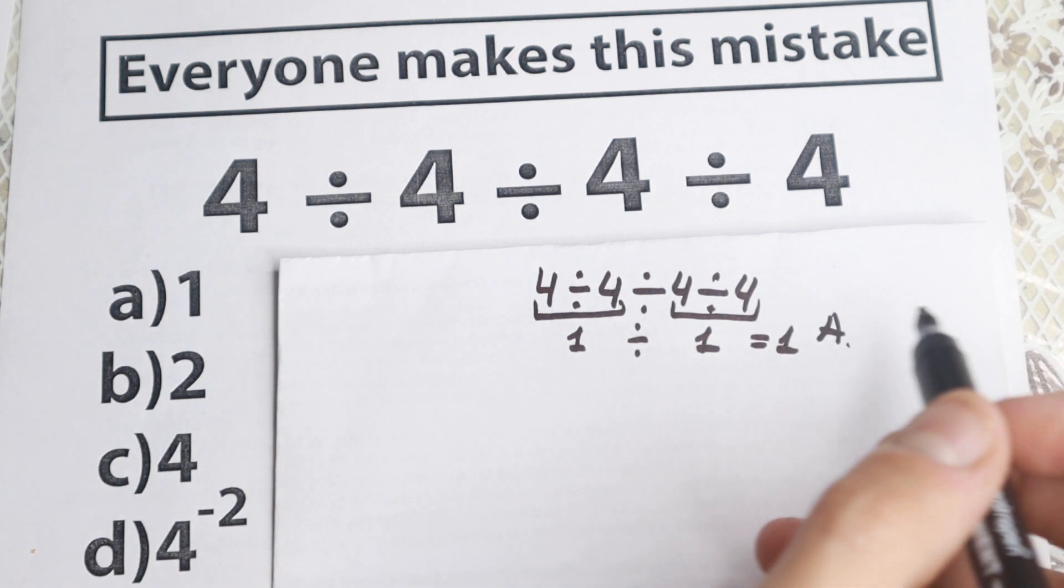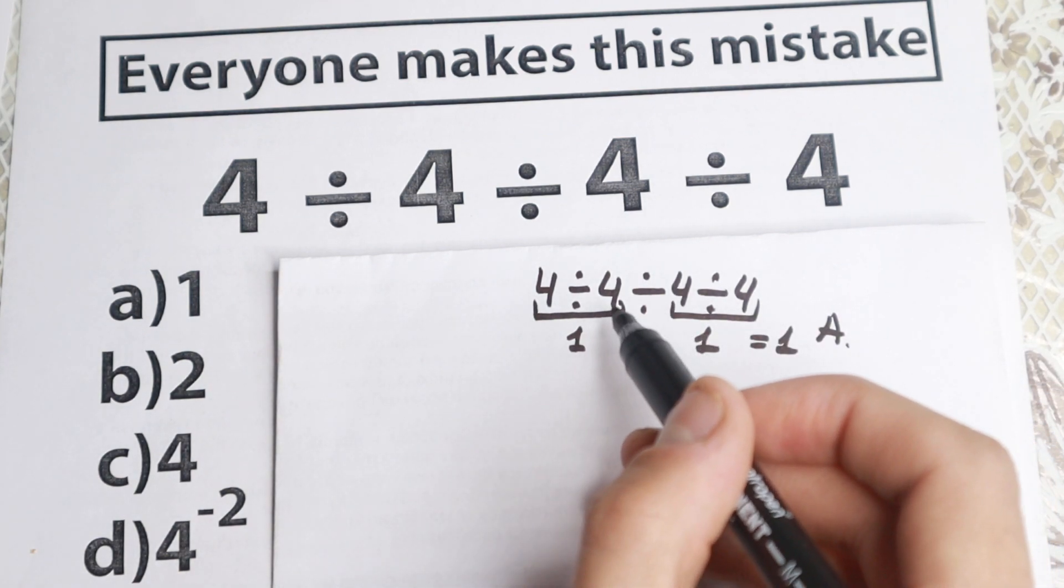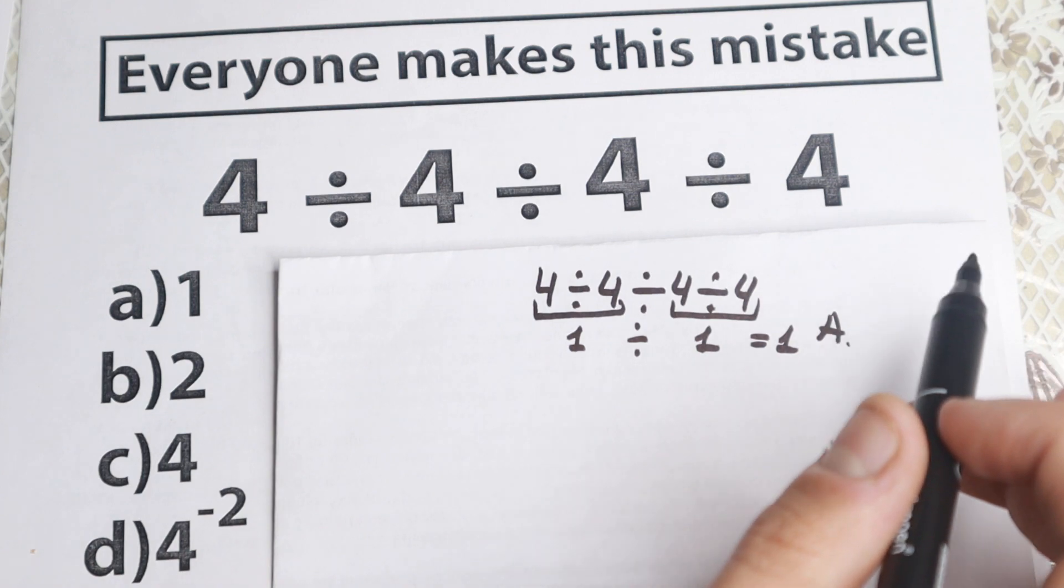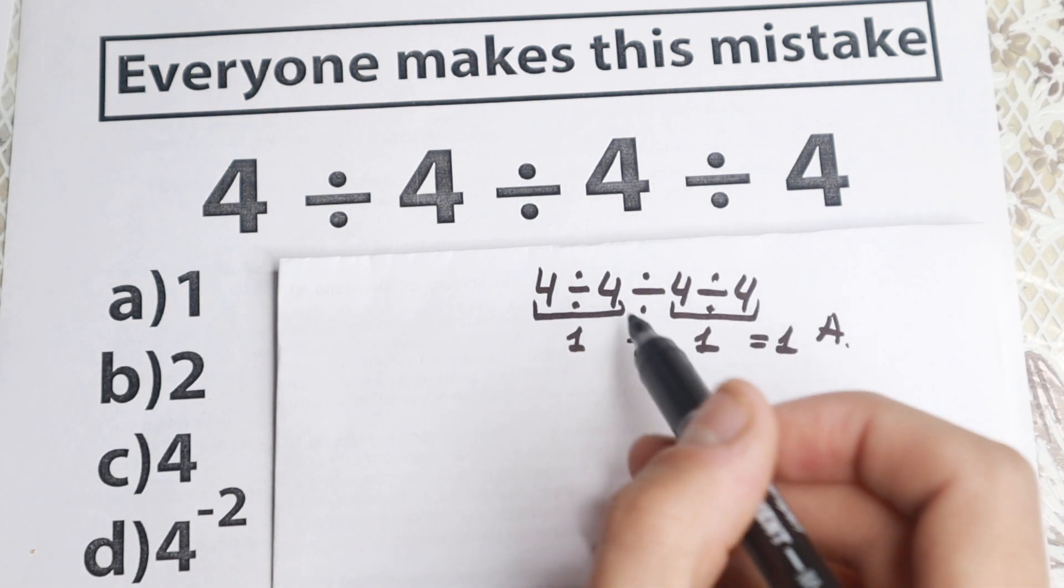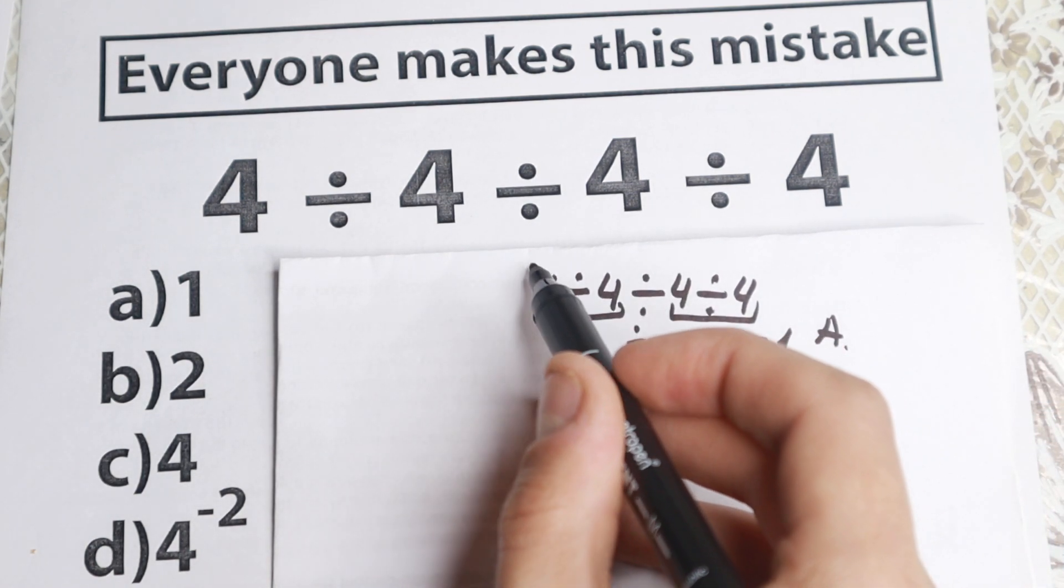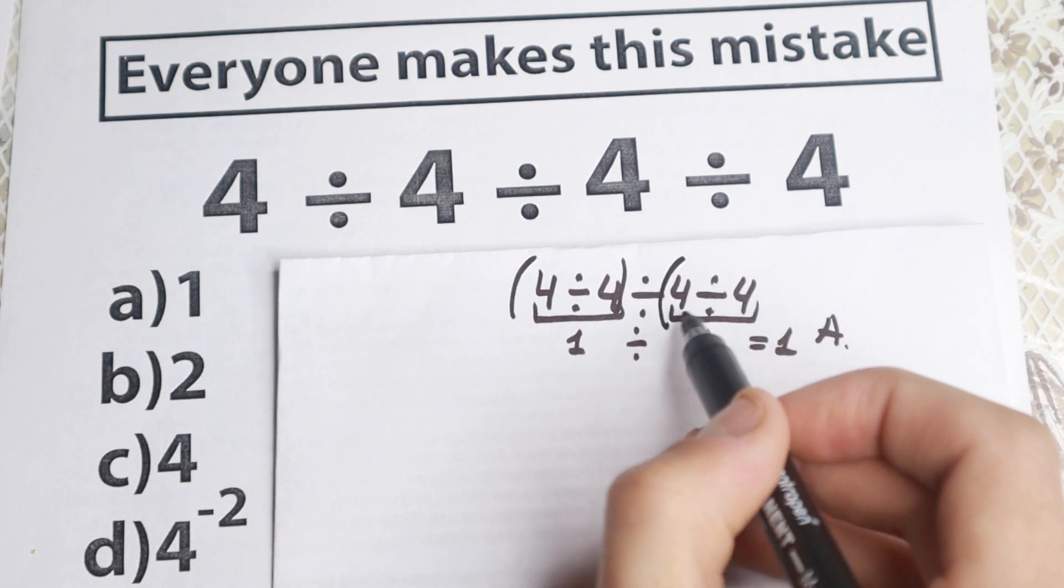And then I told them, okay, this is absolutely incorrect, because we cannot go like from left to right. But a lot of students ask me when this answer will be correct. And I answer them, okay, let's put parentheses right here and right here.